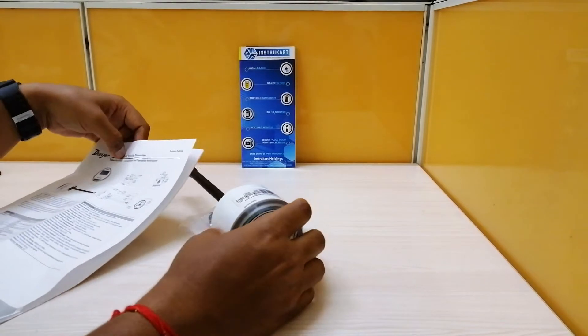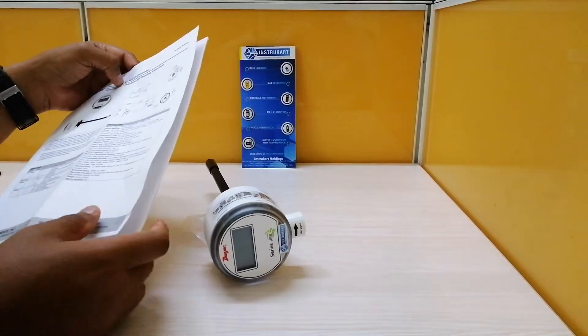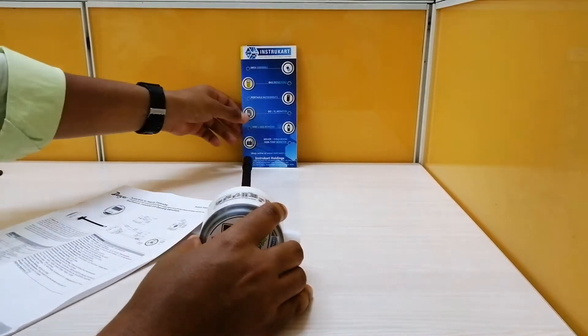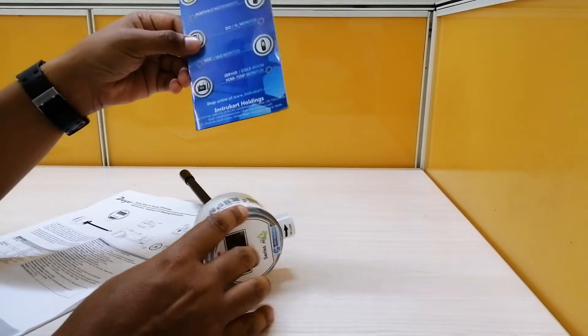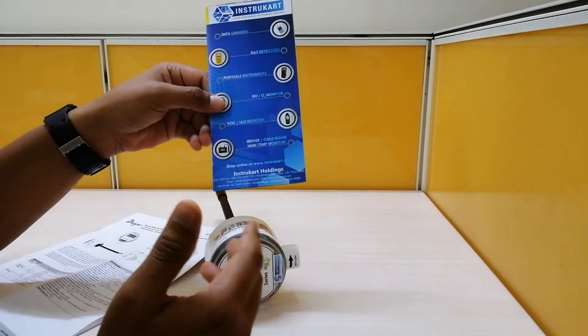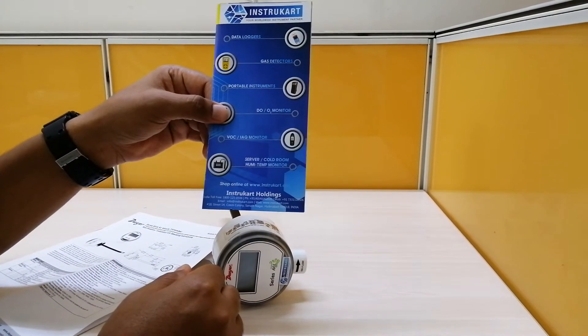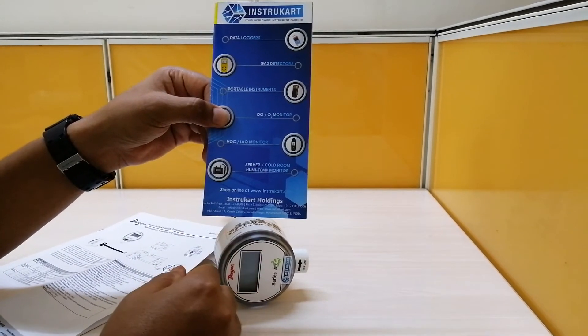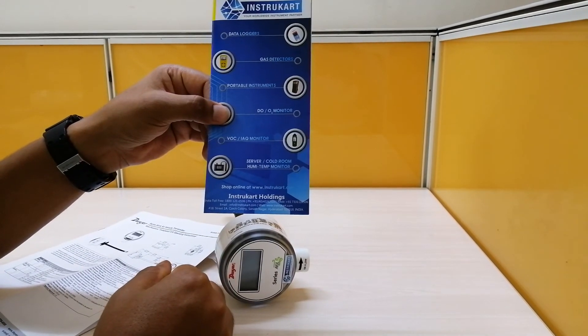You can also see the other models which are available in the same family or series. To know more about this air velocity transmitter and different ranges from different products, you can always reach at www.instrucard.com. Talk to our expert for buying suggestions. Thanks for watching.